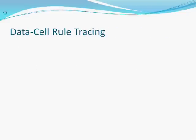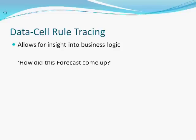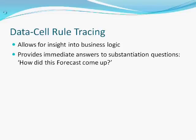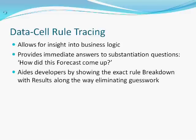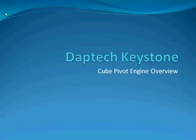The data cell rule tracing allows for insight into business logic, since every business is going to have its own implementation of Keystone. This provides immediate answers to substantiation questions — so how did this forecast number come out? Can you please explain this budget and how we got there? This aids developers by showing the exact rule breakdown with results along the way, eliminating the guesswork. Thanks for viewing this presentation, and I hope this helps you come to grips with what we've done in the new version of Keystone 2.0.